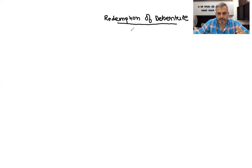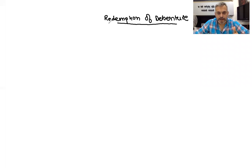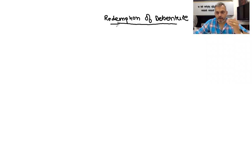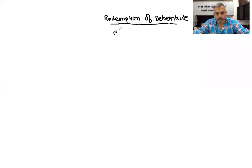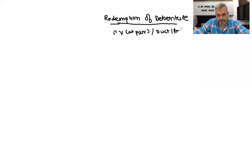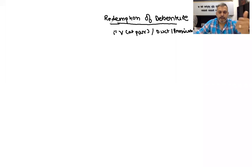Debentures are basically a liability of the company, and since it's a liability, it comes with a tenure — we have to pay back this money to our debenture holders. Debentures are issued either at par, at a premium, or at a discount. We are going to see how they are redeemed. First, we will study redemption of debentures at par for various types of debentures issued at face value, at a discount, or at a premium. In the next session we will cover when debentures are redeemed at a premium.